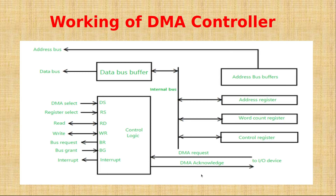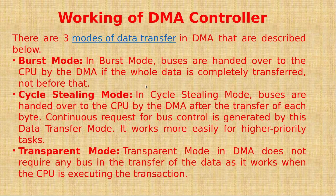In the overall structure, the DMA sends a request to the input/output device, which gives the DMA request signal, followed by the DMA acknowledge. Read and write operations are performed using bus request and bus grant signals. Interrupt access, register select, DMA select, and the data bus buffer are also part of this structure.